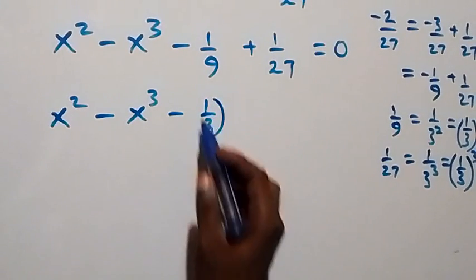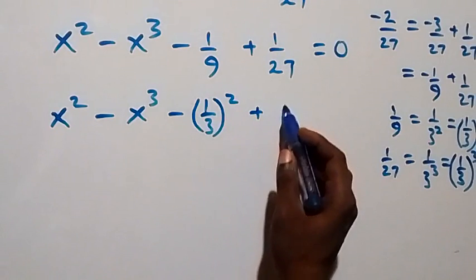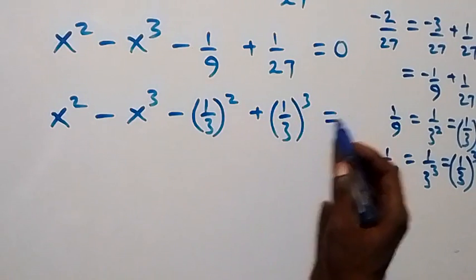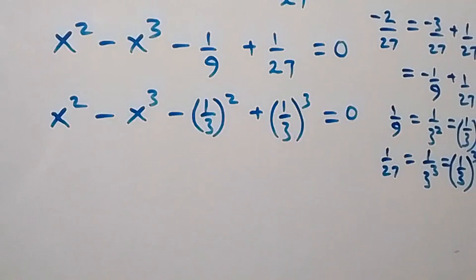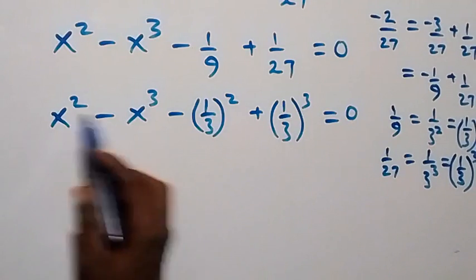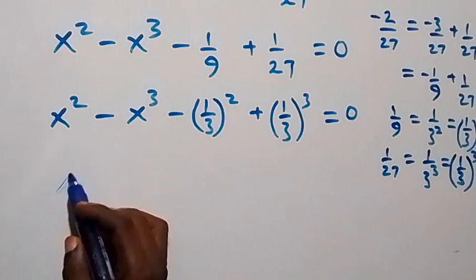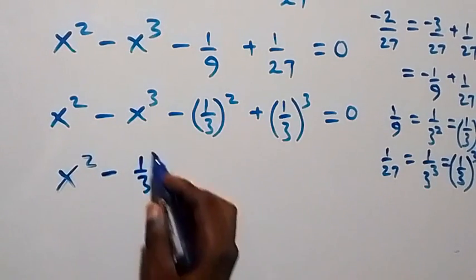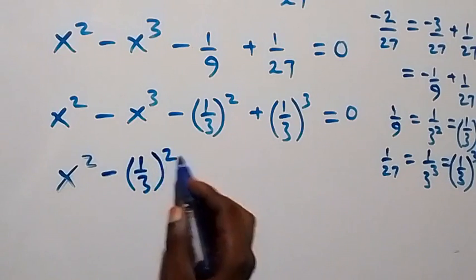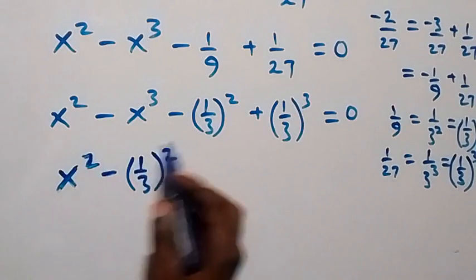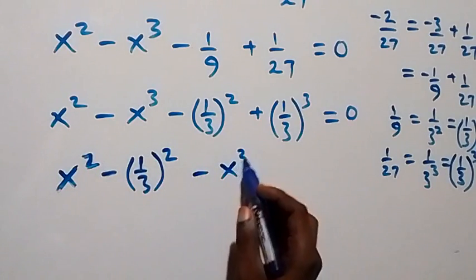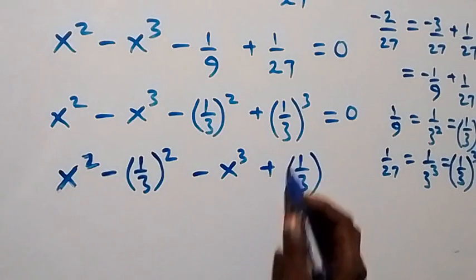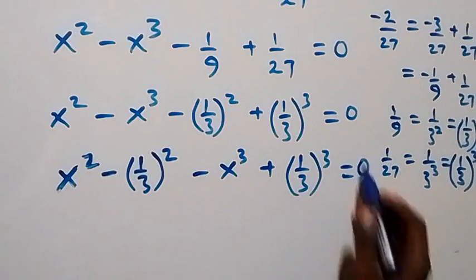Minus (1/3) squared plus (1/3) cubed, now equals zero. From here, let's bring the squared terms together, and we have x squared minus (1/3) squared, then minus x cubed plus (1/3) cubed, equals zero.